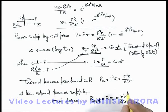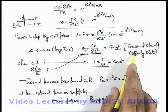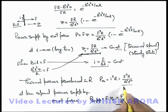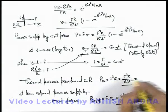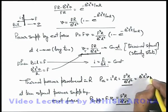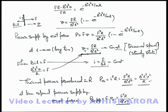At terminal speed, the power supplied by the external force equals F multiplied by the terminal speed FR over B²L², which gives F²R over B²L². The two powers are equal, meaning after steady state is achieved and terminal speed is attained, whatever power is spent by the external agent is exactly dissipated in the resistance as thermal power. This thermal power can also be expressed as B²L²v² over R. This analysis is the basis of many different kinds of problems involving motional EMF under an external force.